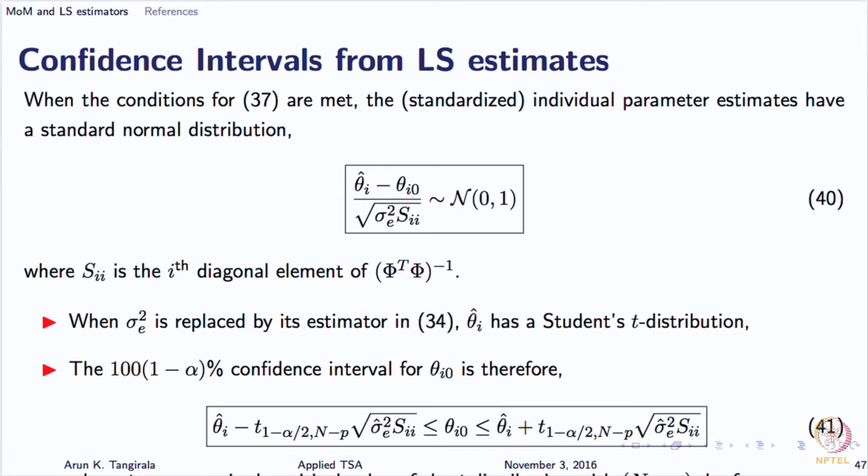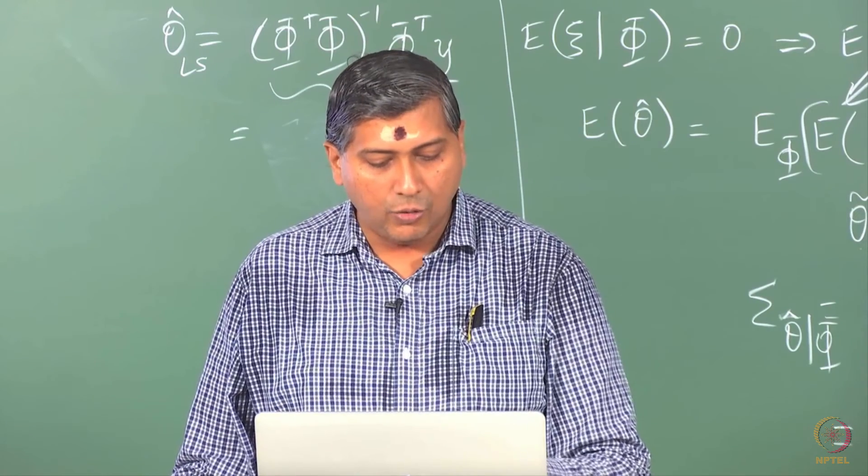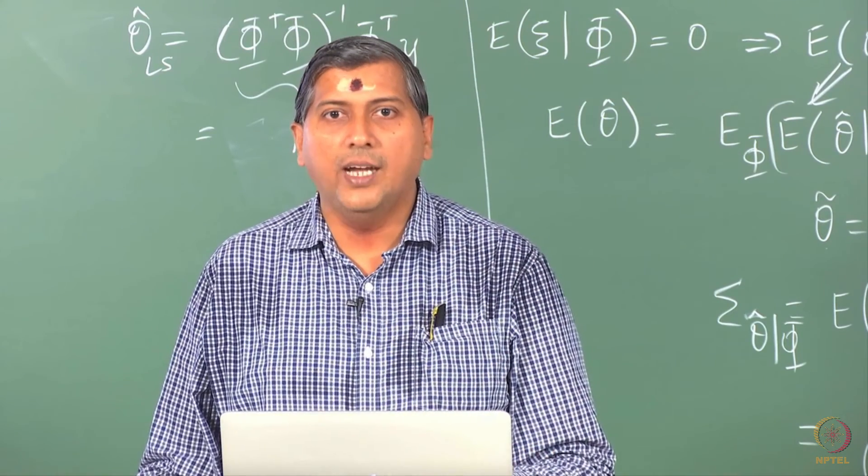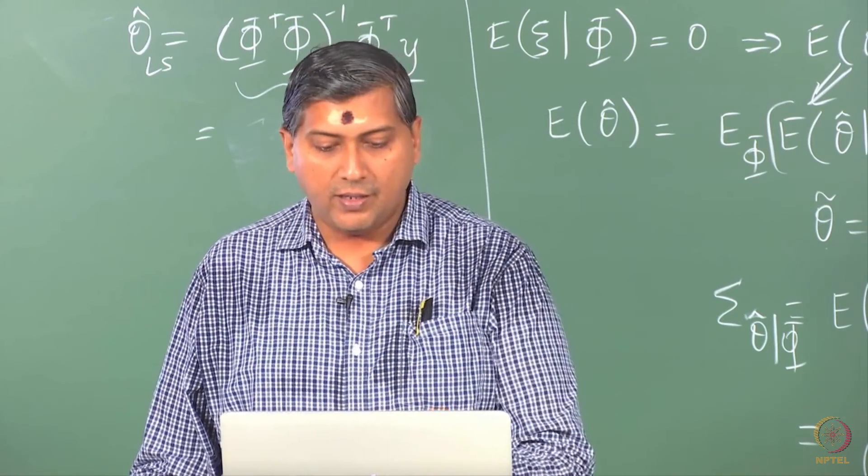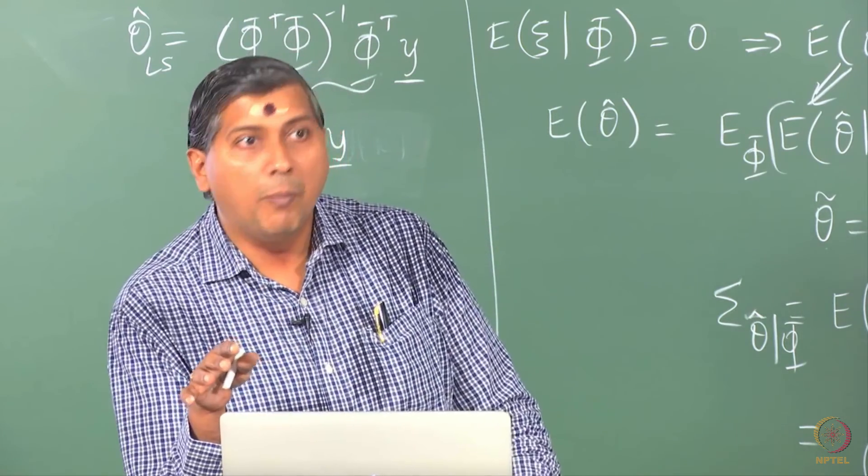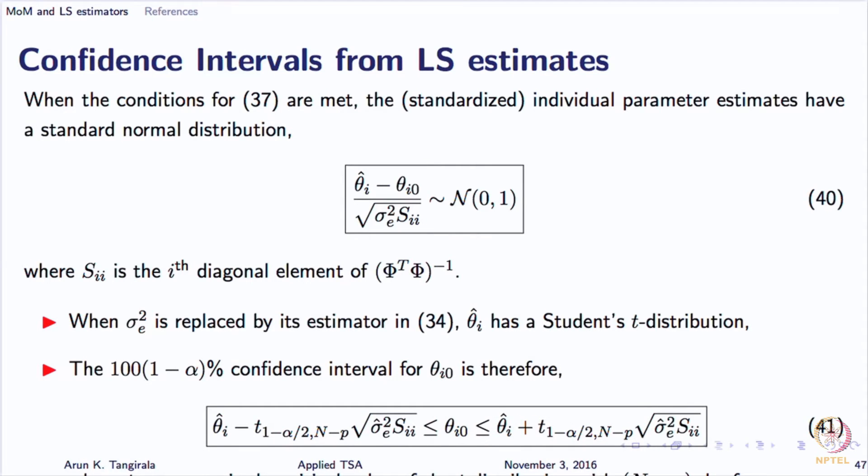Since we are estimating sigma square e and we do not know sigma square e, the confidence region strictly speaking should be written in terms of t distribution, but asymptotically it is a Gaussian distribution. For finite small n, we replace this Gaussian distribution in equation 40 with a t distribution, but that is only valid when the errors are Gaussian. So to avoid the confusion, simply replace the t values there with Gaussian, corresponding Gaussian distribution values when n is large. Typically in our cases, n is large. The small sample cases are different.